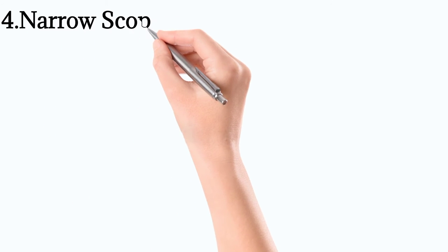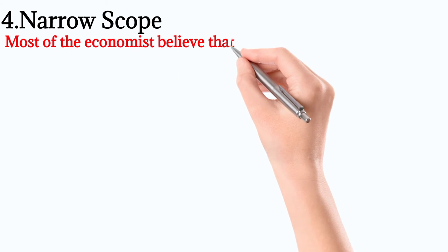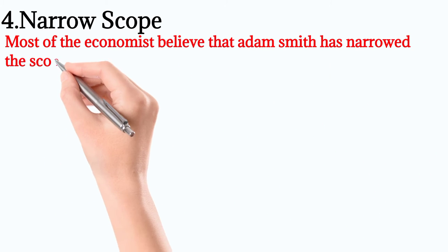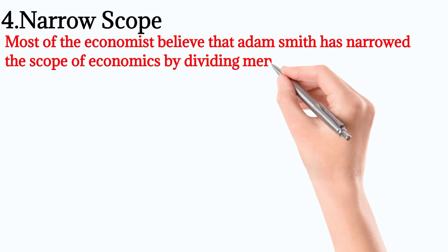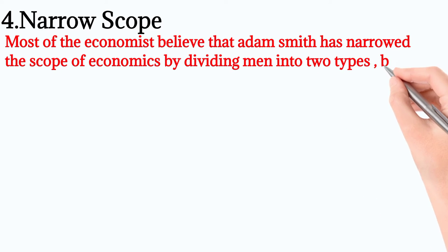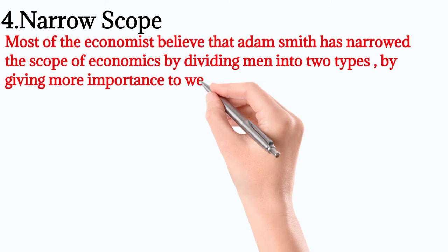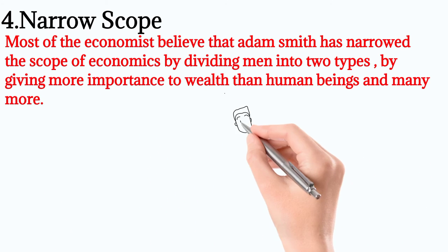Number 4: Narrow scope. Most economists believe that Adam Smith narrowed the scope of economics by dividing men into two types, by giving more importance to wealth than human beings, and many more reasons.